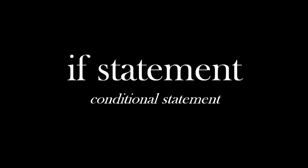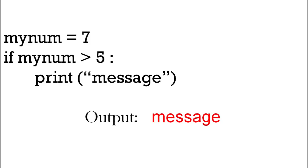If statement. Here we've got mynum equals seven. And the if part, the condition mynum is greater than five. So in this case the number is greater than five so it prints a message. The computer will have the output message. When my number is less than five or equal to five then it won't print anything. There's no output.